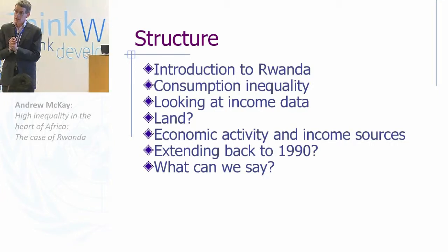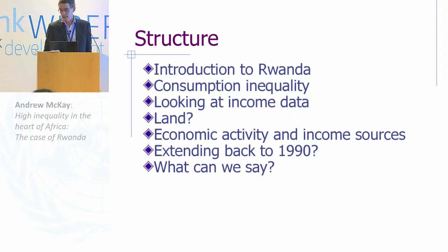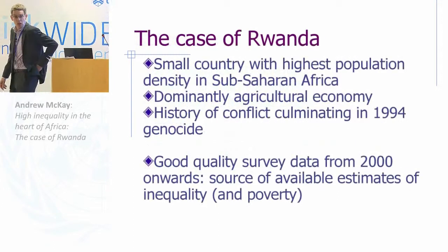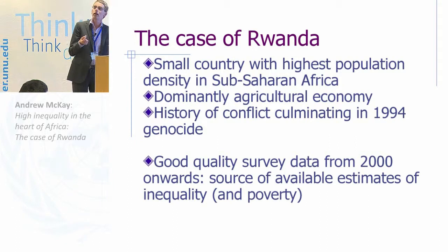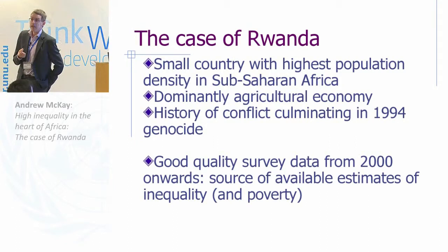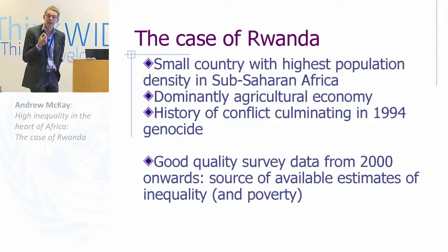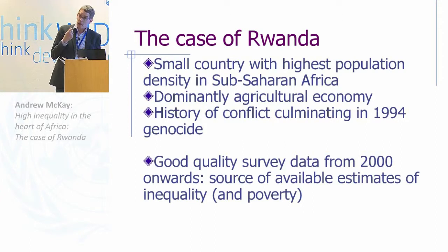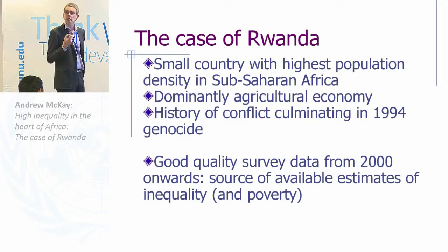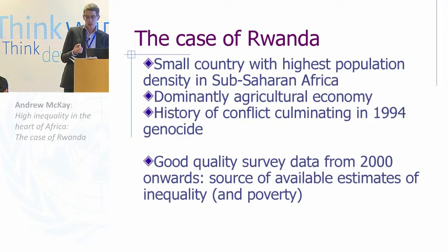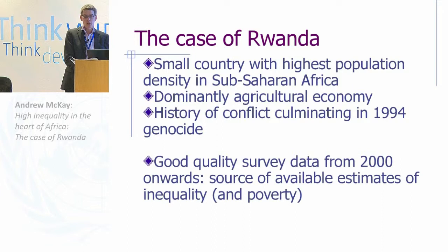Land is obviously an important story, so we'll talk about that too. Most of the data I'm going to use for the first 10 minutes are from 2000 onwards, but at the end I'm going to try and say something comparing back to 1990. Rwanda is a special country — it's not a typical African country at all. It's got the highest population density in Africa, it's dominantly agricultural, and like quite a few African countries it's got a long history of conflict, culminating in the 1994 genocide. It's also a country with quite good survey data — there have been three surveys since 2000.